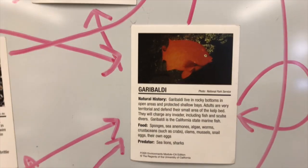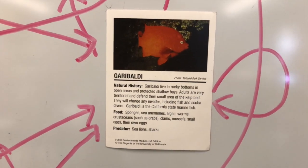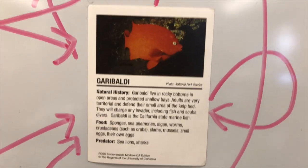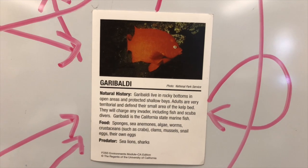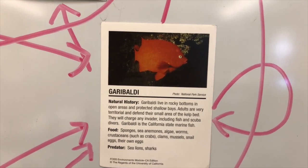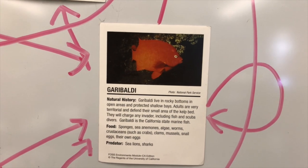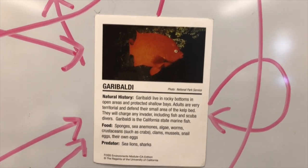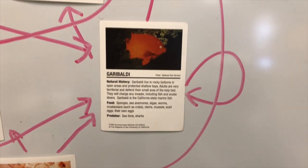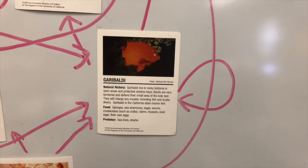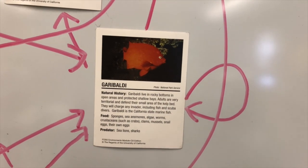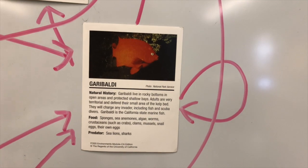One of the strangest ones is this fish called the Garibaldi fish. The Garibaldi eats sponges, anemones, algae — which is another word for phytoplankton — worms, crustaceans such as crabs, clams, mussels, and snail eggs, and their own eggs. The female, the mother Garibaldi, will actually eat her own eggs. The father drives her away and he protects the eggs.